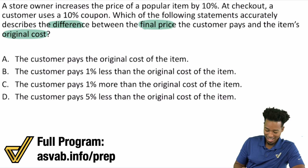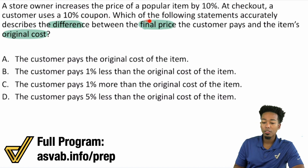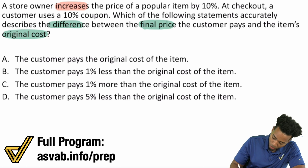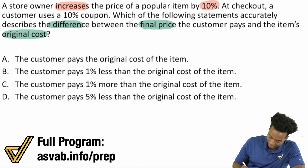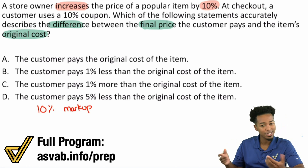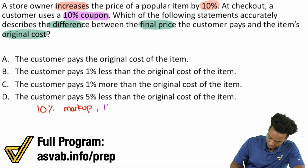Here's what the problem says: a store owner increases the price of a popular item by 10% — that is a 10% markup. At checkout, a customer uses a 10% coupon — meaning a 10% discount. So we have a 10% markup and a 10% discount.